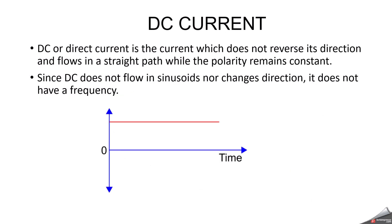Now we can discuss DC current. DC means direct current — it flows in only one direction and can be found in electronic circuits and batteries. It does not reverse its direction and flows in a straight path while the polarity remains constant. DC does not flow in sinusoids nor change its direction, so it does not have a frequency. This is the basic difference between alternating current and direct current.